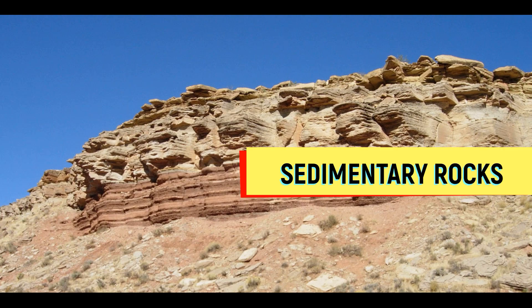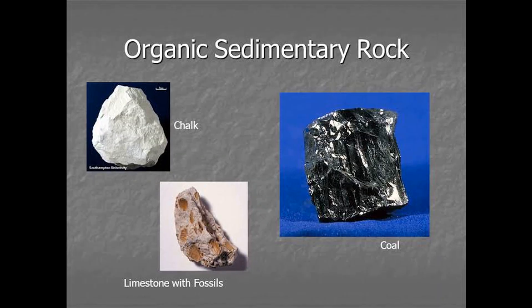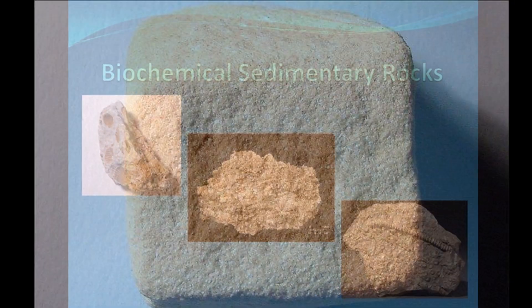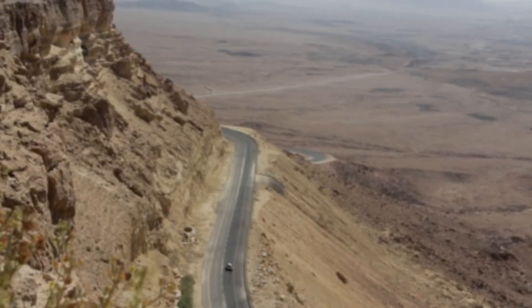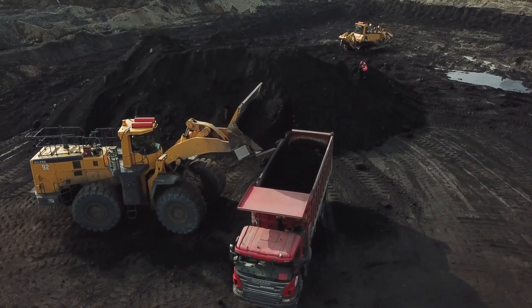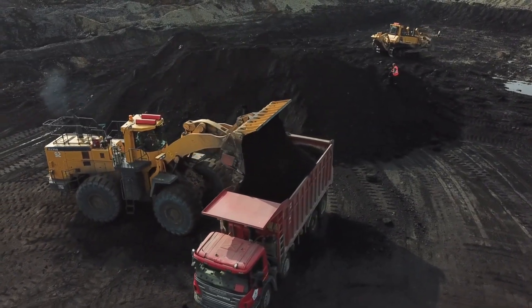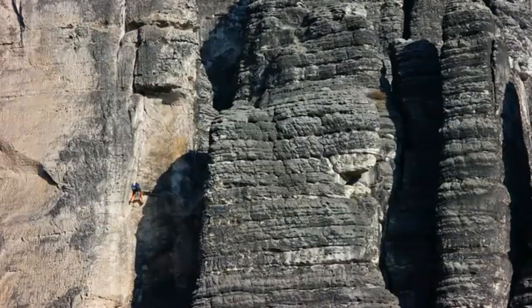Sedimentary rocks are formed from pieces of other existing rock or organic material. The different types of sedimentary rocks are clastic, organic or biological, and chemical rocks. The clastic sedimentary rocks, like sandstone, are formed from grains or pieces of other rocks. Organic sedimentary rocks, like coal, are formed from hard biological materials like plants, shells, and bones that are compressed into rock.